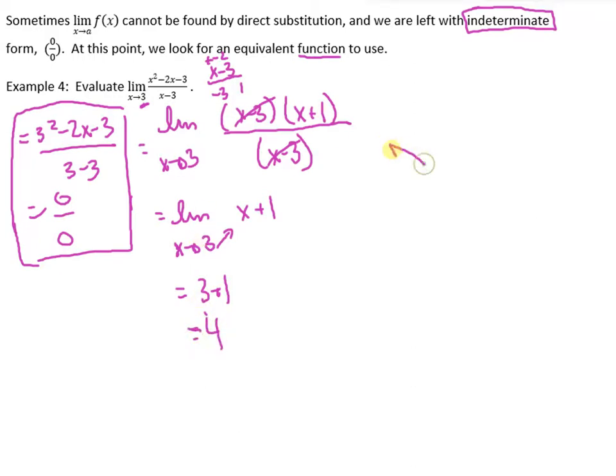We know from advanced functions that if we cancel a factor in the top and the bottom, there's a hole at x equals 3. That's fine. It doesn't matter if there's a hole, because all we're looking at is the limit as x approaches 3 from the left and x approaches 3 from the right. It doesn't actually have to exist at that number. So in this case, the limit is still 4.